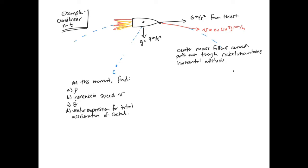At this moment, the speed of the rocket moving along the curved path is equal to 20 times 10 to the 3 kilometers per hour. The problem asks us to find: the radius of curvature rho, the increase in speed v, the rate of change of angle with time theta dot, and a vector expression for the total acceleration of the rocket.